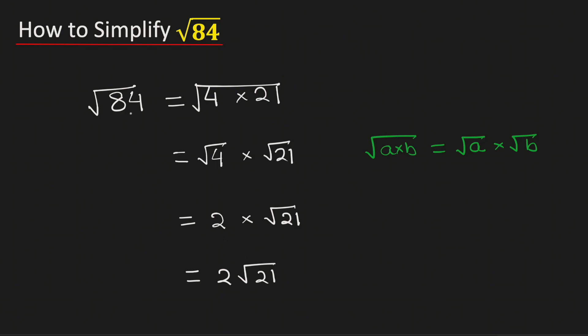Therefore square root of 84 in its simplified radical form is equal to 2 root 21, and this is our final answer. Thank you for watching.